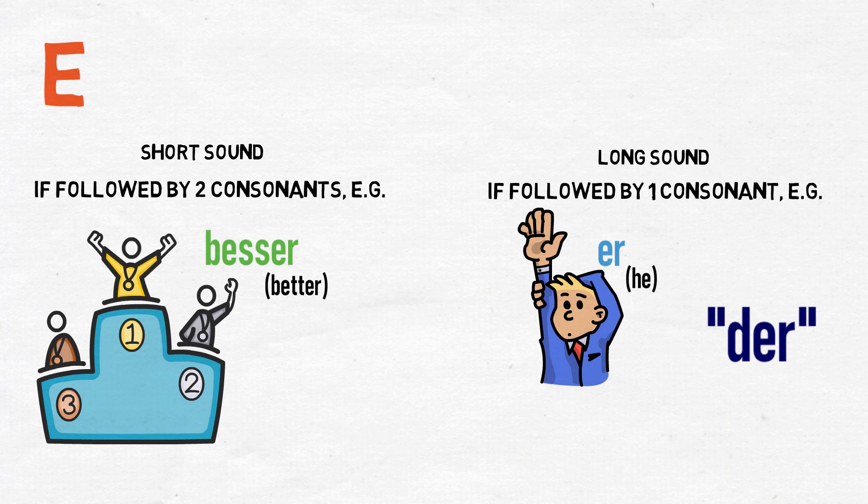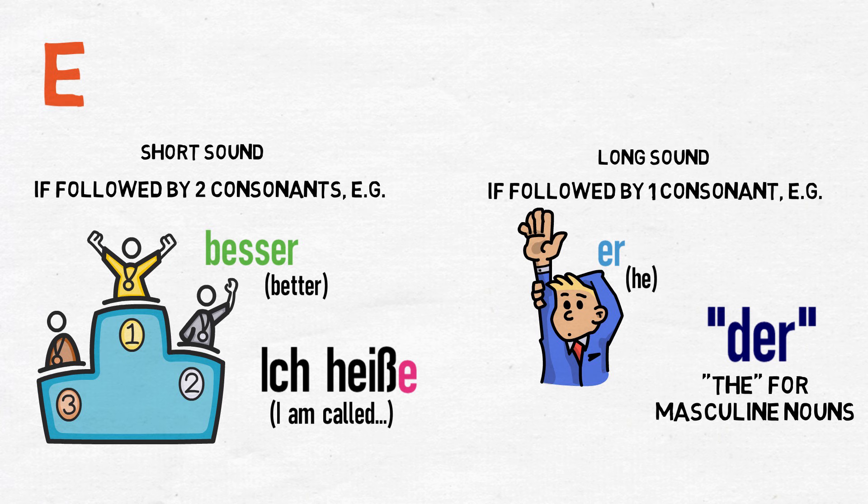In German, lots of words end in the letter E, whether they are verbs in the I form — for example, ich heiße, meaning I am called — or plurals of nouns, for example Tage, meaning days. In this instance, the letter E at the end is pronounced as a short E.